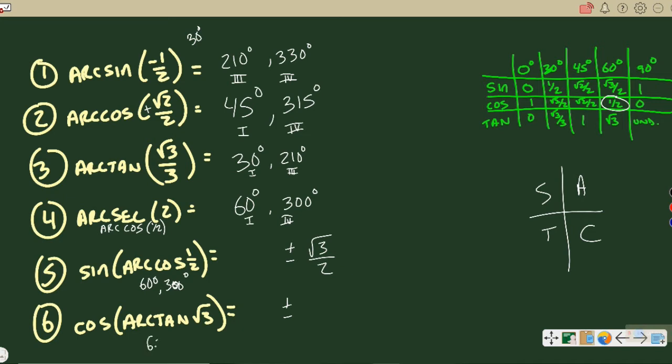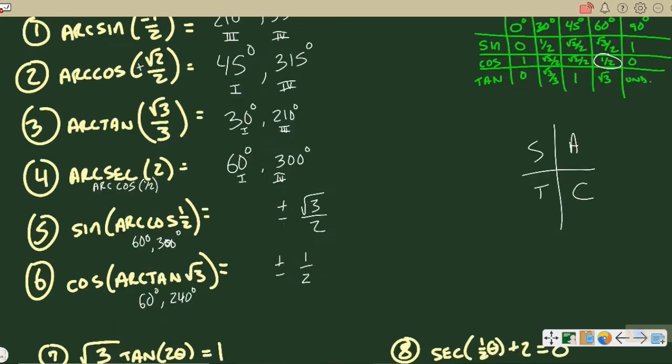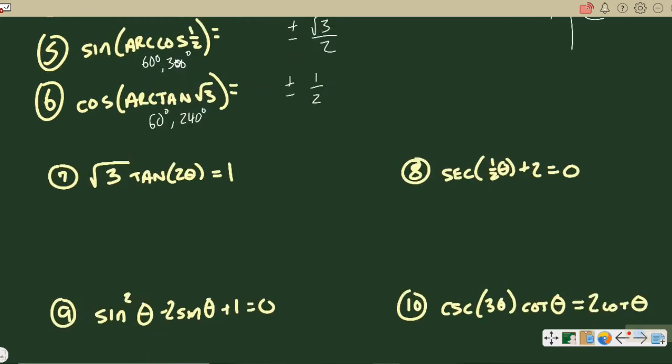Next one, arc tan of root 3. That happens in the chart at 60 degrees, and in quadrant three for tangent at 240 degrees, so we're taking cosine of both of those. Cosine of 60, it's already circled over there, is one half, so negative one half is your other answer, positive and negative one half for this problem.